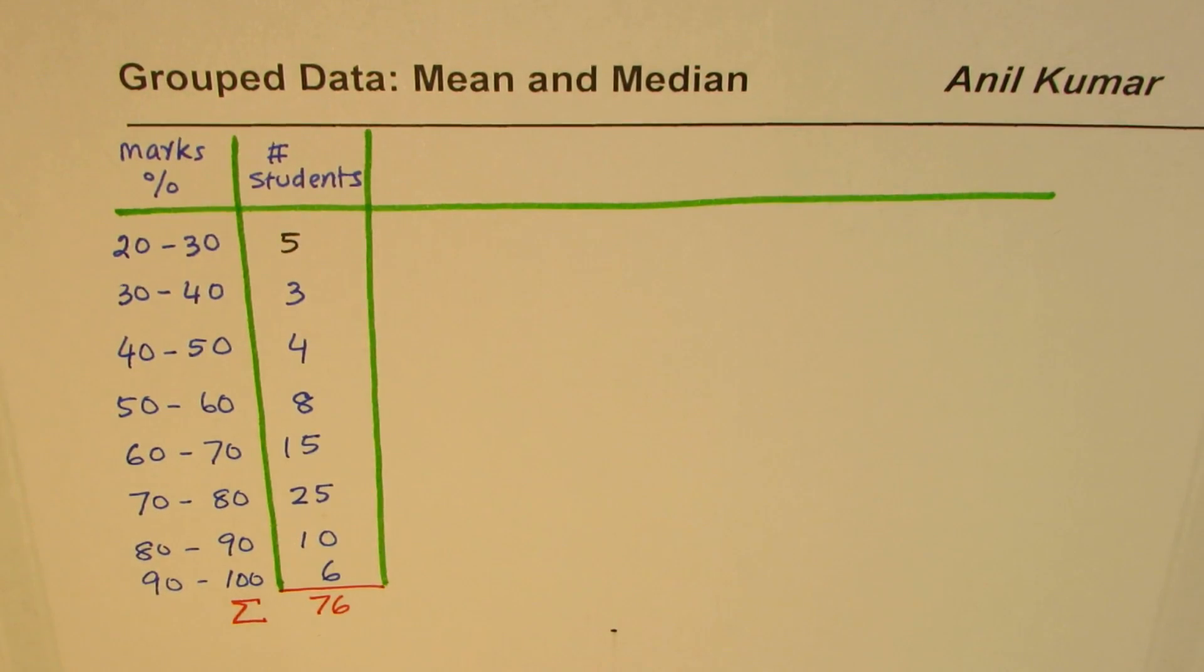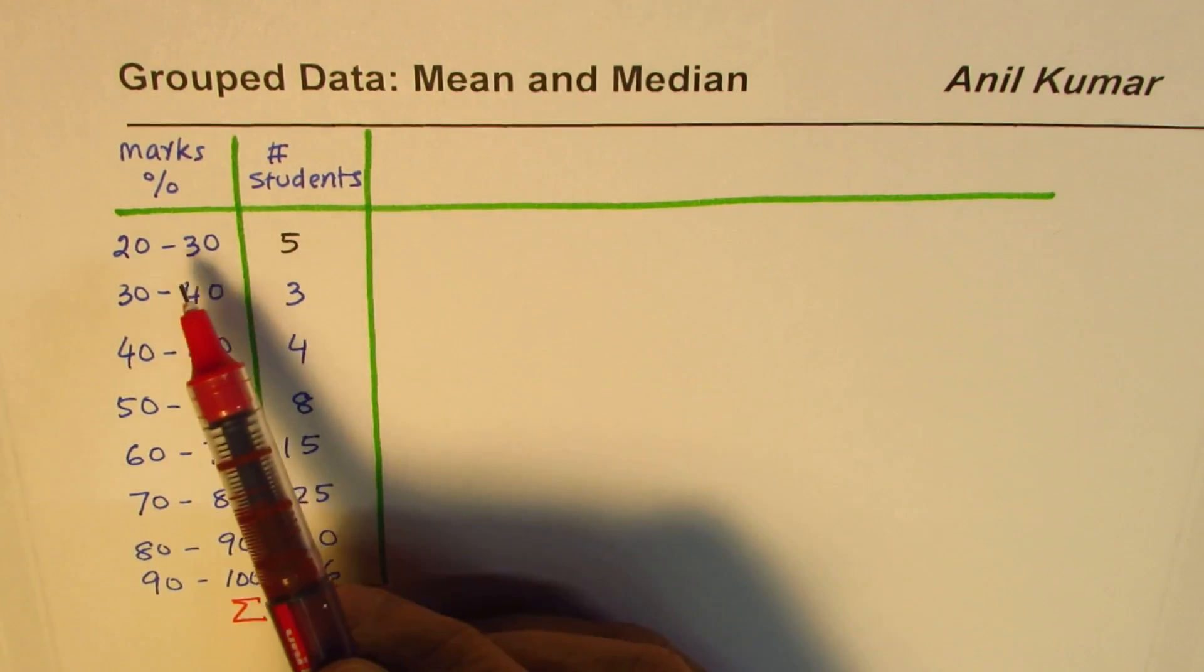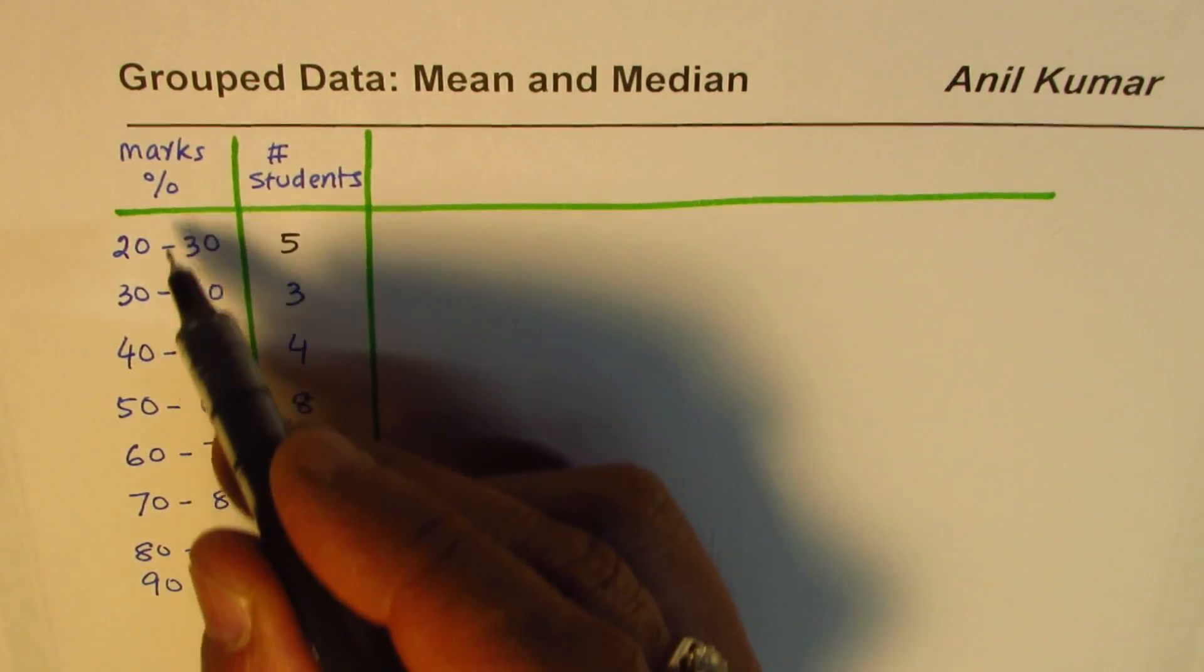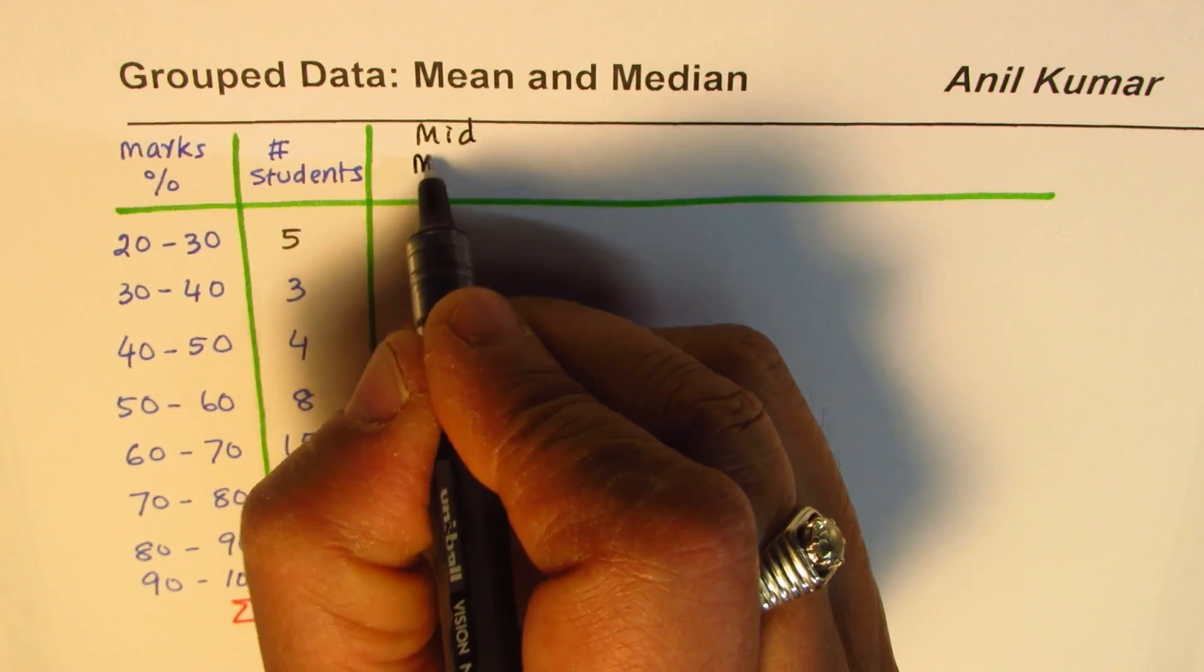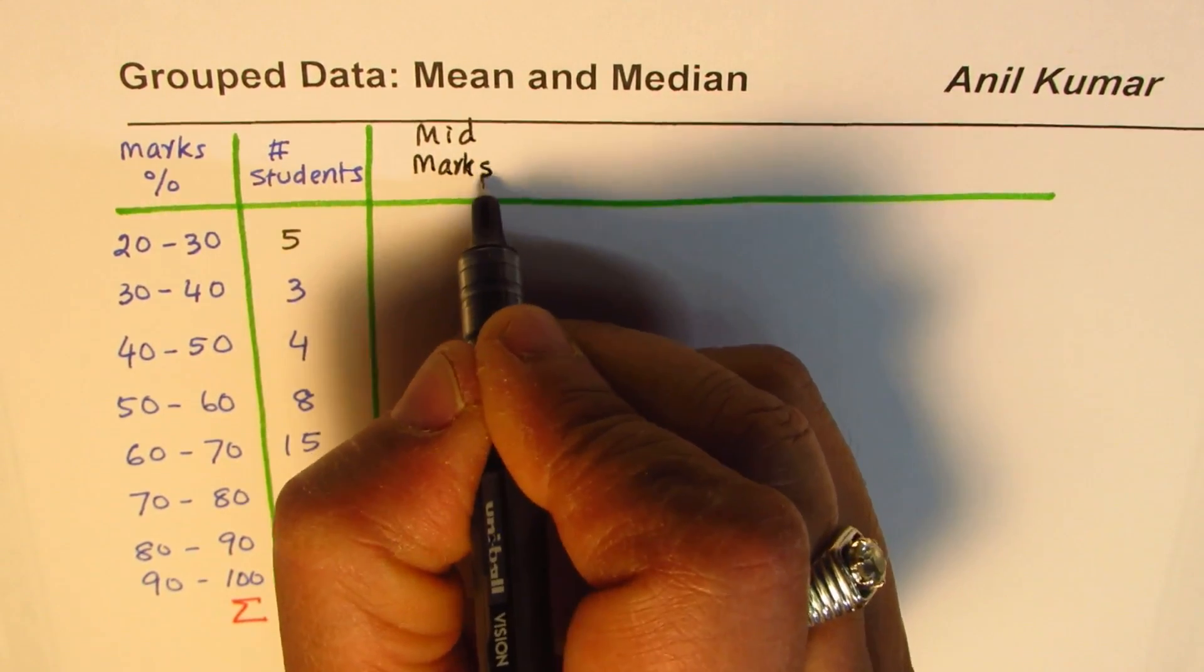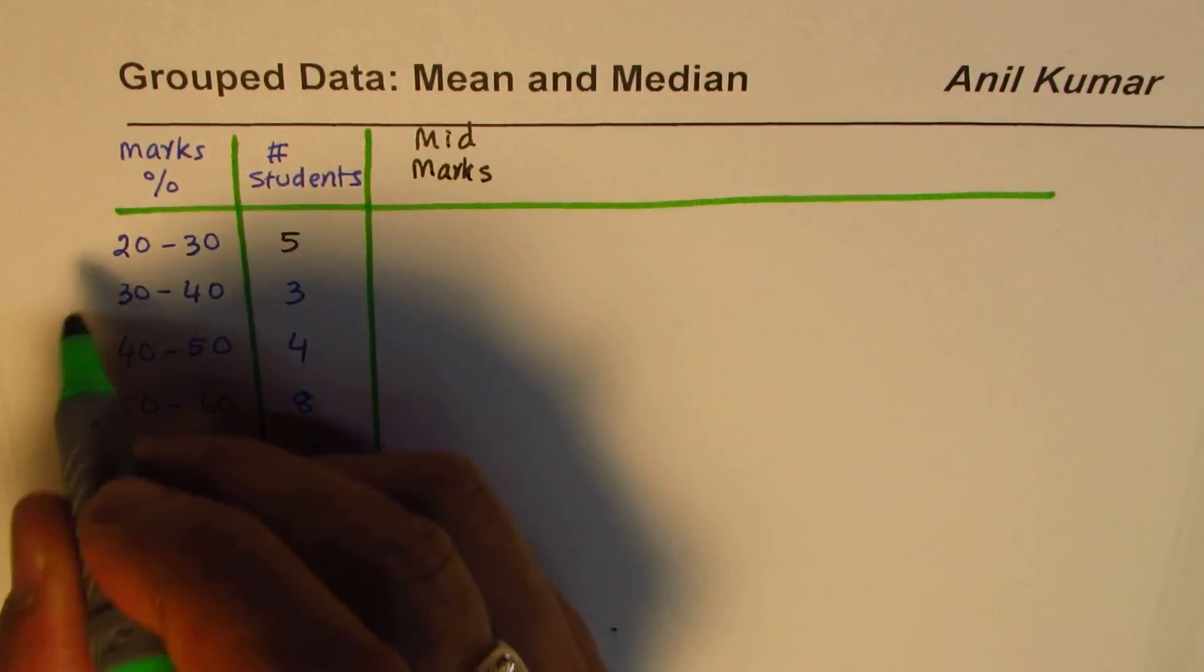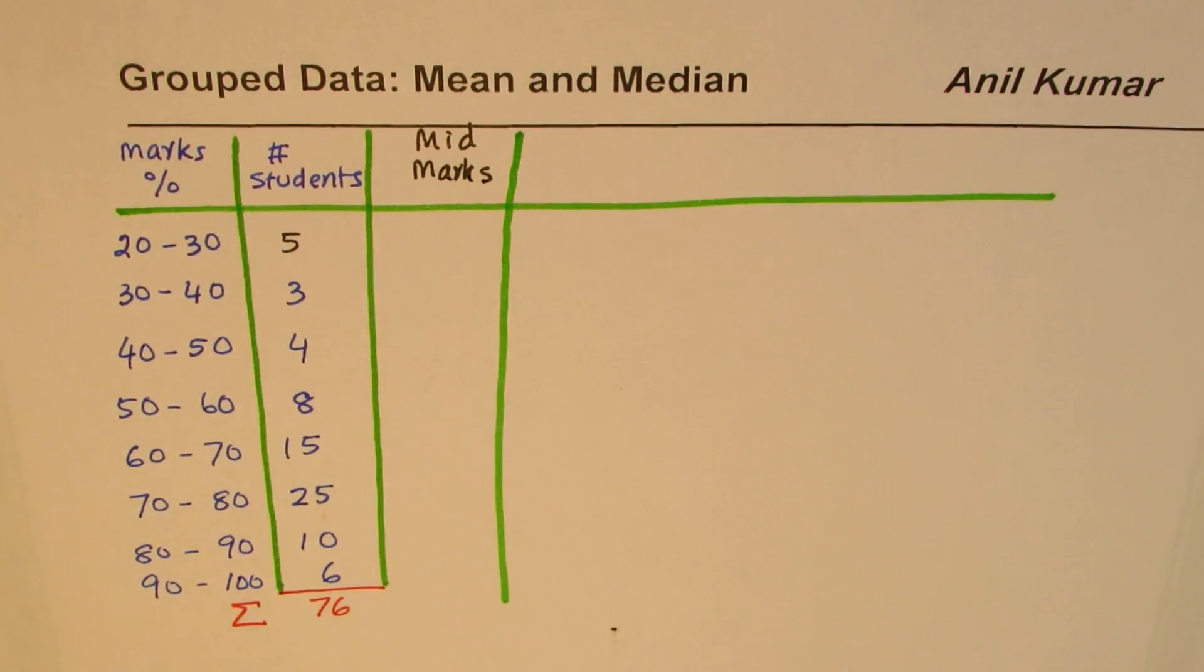The question is how to find mean and median of such grouped data. Mean is the average value. To find mean we have to find mid value of the given intervals.